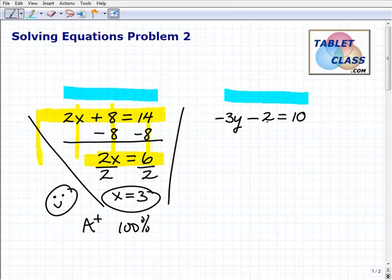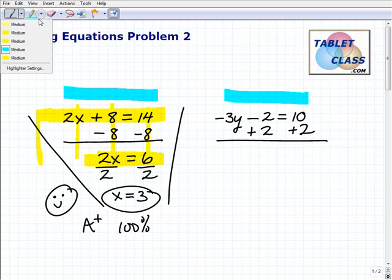We have negative 3y minus 2 equals 10. So here, I want to solve for y. So I'm going to get rid of that negative 2 by adding a 2 to both sides of the equation. And then now, once you learn one problem, you see I'm just repeating the same steps, creating good habits here. And I'm not going to do anything really different.